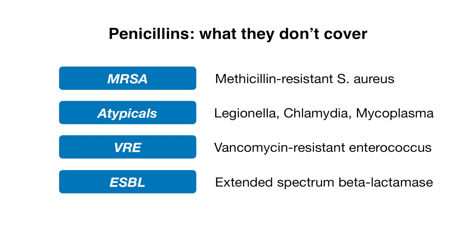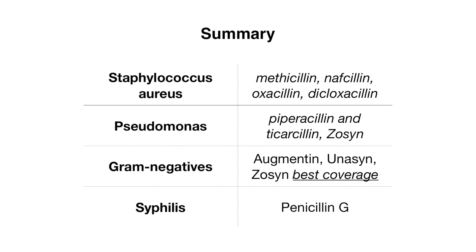Let's go over a brief summary of our penicillin class. For staphylococcal coverage, particularly Staph aureus, remember methicillin, nafcillin, oxacillin, and dicloxacillin — your penicillinase-resistant antibiotics. For pseudomonal coverage, we have piperacillin and ticarcillin, and when piperacillin is combined with its beta-lactamase inhibitor tazobactam, you get Zosyn. For the best gram-negative coverage, think of penicillin and beta-lactamase inhibitor combinations: Augmentin, Unasyn, and Zosyn. And last but not least, for syphilis coverage, remember basic penicillin.